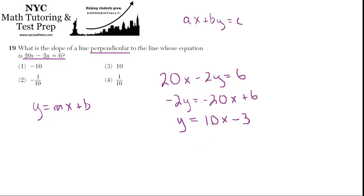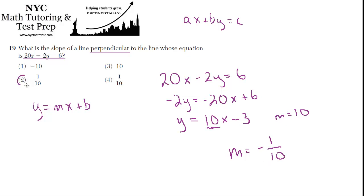Now we have it in slope-intercept form, so the slope of this line is 10. The slope of a line perpendicular to this must be the opposite reciprocal of that, so the slope we want is negative 1 over 10, which is choice 2.